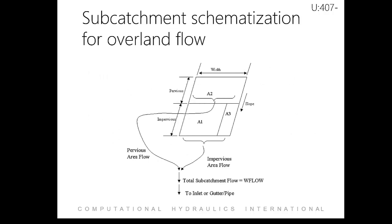This diagram shows a typical subcatchment scheme as recognized by SWMM. In this illustration, the subcatchment is divided into three subsections. A1 represents the impervious portion of the subcatchment like roofs, roads and sidewalks. A2 represents the pervious portion of the subcatchment like lawns and gardens. A3 represents the part of the subcatchment that is impervious and has no depression storage. Depression storage accounts for the small storages that are found in impervious areas like potholes in parking lots. In the case of a steep roof, there would be no depression storage.